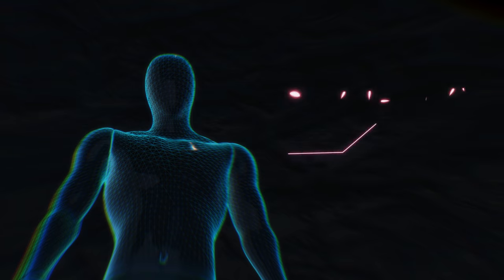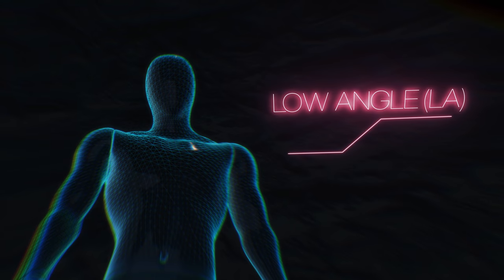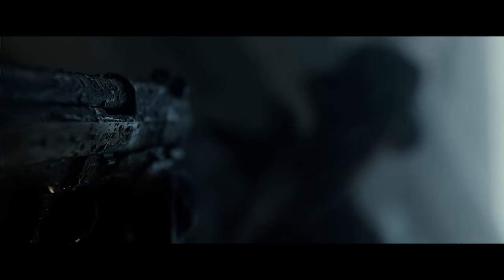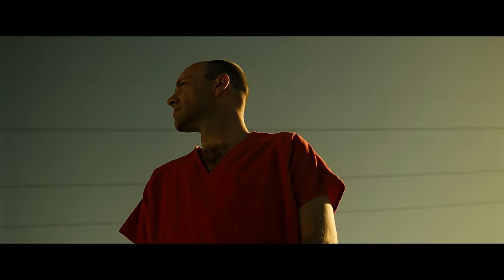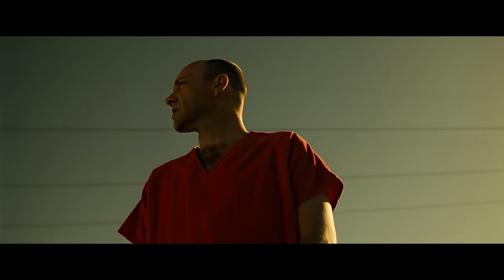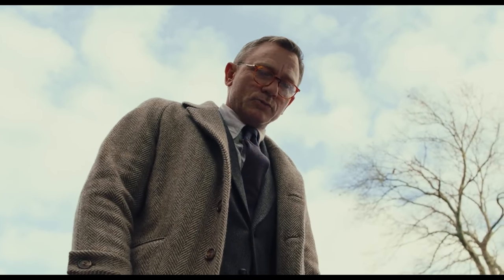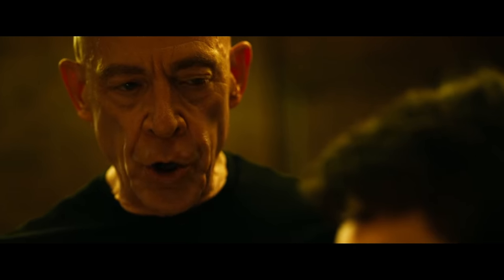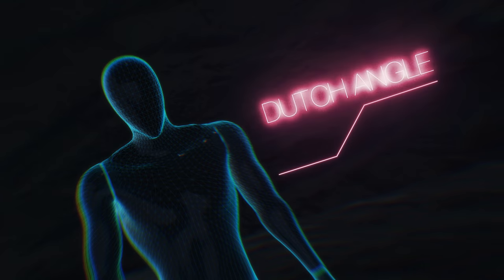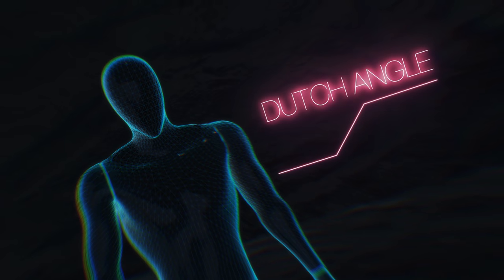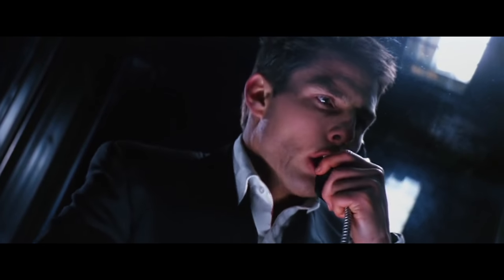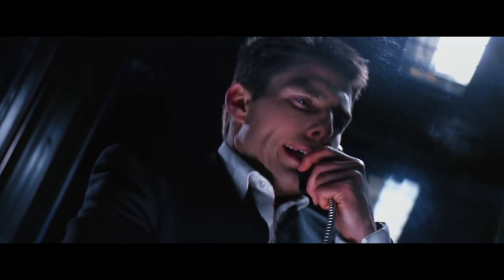Opposite of that, we have our low angle. And if the high angle pushes the idea of weakness, this one will give your character strength — making the subject larger and dominant in frame. This is below the eye line and could be anything from very subtle to extreme. Then you have the Dutch angle, when your horizon is off, with some of my favorite examples coming from the films of Brian De Palma. It's a great way to make the world feel a bit — or a lot — off.